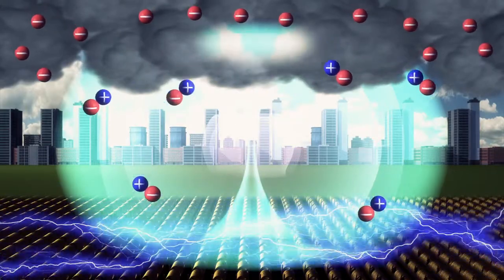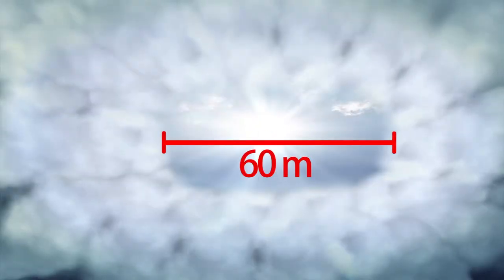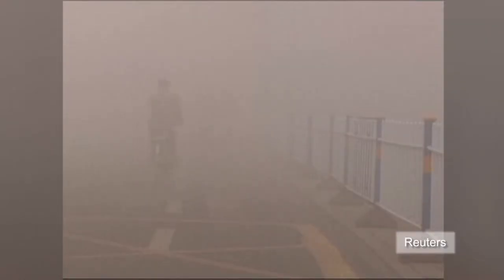This creates holes of clean air in the sky, which can be as large as 60 meters. Severe smog is a major problem in Beijing and elsewhere in northern China, damaging health and reducing visibility to less than 10 meters in some places.